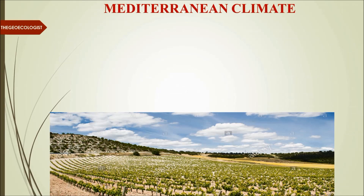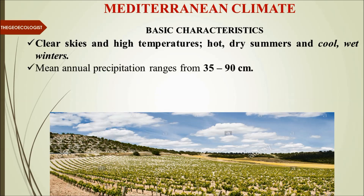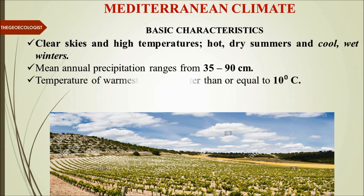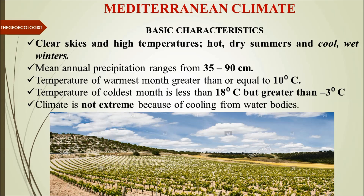Looking at the climate specifically, basic characteristics include mostly clear skies and high temperatures. There are hot dry summers and cool wet winters — cool wet winters being the major criteria, that is winter rainfall. Mean annual precipitation ranges from 35 to 90 centimeters. The temperature of the warmest month is greater than or equal to 10 degrees C, and the coldest month is less than 18 degrees C but greater than minus three degrees C. So average temperature is somewhere close to 10 to 15 degrees C throughout the year, and the climate is not extreme.